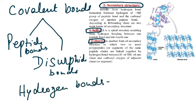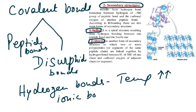Hydrogen bonds will be broken when you raise the temperature. Ionic bonds will be broken if there is too much change in pH. So these are the important properties of the bonds — covalent (strong), hydrogen (weak, broken by heat), and ionic (broken by pH change).